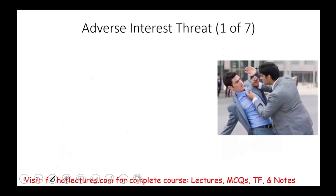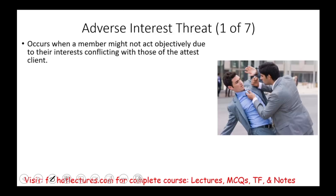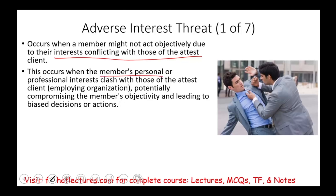Let's get started with the first threat, which is called the adverse interest threat. This threat occurs when a member might not objectively act due to their interests conflicting with those of the attest client. Simply put, you have a different interest than the client you are auditing. This adverse interest could also occur if you work for a company — it's between you and the company. This occurs when the member's personal or professional interest clashes with those of the attest client or your employee organization, and that could potentially compromise your objectivity, leading to biased decisions or actions.